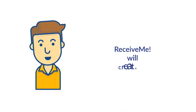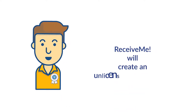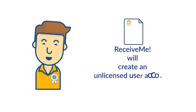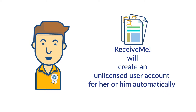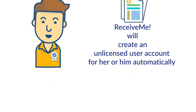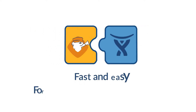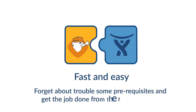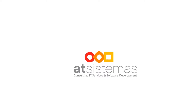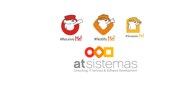What if the sender is a non-Jira user? No problem at all — Receive Me will automatically create an unlicensed user account for them. Get the most out of these wonderful features straight away; setting up Receive Me is fast and easy. Forget about troublesome prerequisites and get the job done from the first moment.